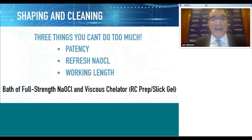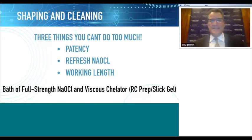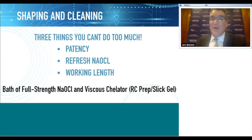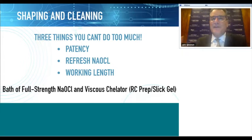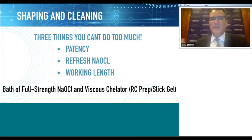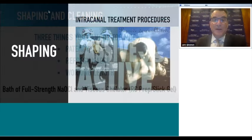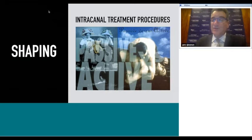During instrumentation, I keep it simple. I dip my files in a viscous chelator like RC Prep or Slick Gel, which contains EDTA and urea peroxide to emulsify the dental pulp, and instrument through a bath of fresh sodium hypochlorite. The final irrigation protocol—discussed in webinar three—will remove the smear layer, eliminate the biofilm, and do a thorough cleansing of the root canal space. We shape canals in a very passive manner. Never force instruments, stainless steel or nickel-titanium, or you risk a procedural accident—even a broken file.